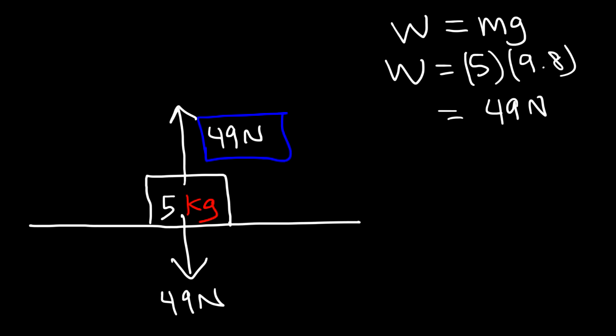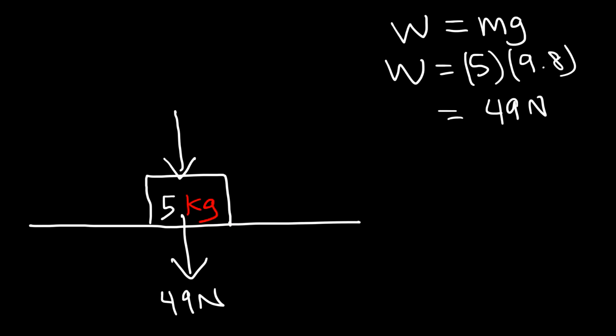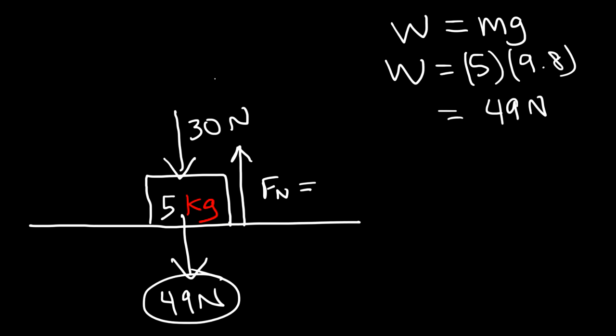Is there anything that we could do to either increase or decrease the normal force without changing the mass of the object? The first thing you could do is press down on the object with another force. Let's say if we apply a force of 30 newtons — imagine taking your hand and pushing it down against the block. If you exert a downward force on the block, the surface now has to exert a greater normal force. Not only must it support the weight of the block, but it must provide enough force to counteract that downward force you're applying. So anytime you apply a downward force on an object, you increase the normal force.